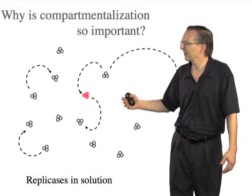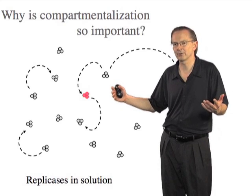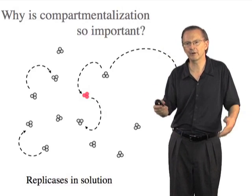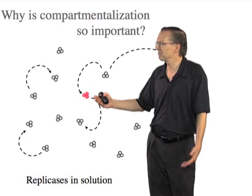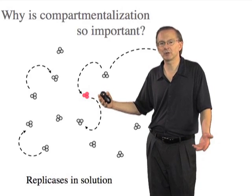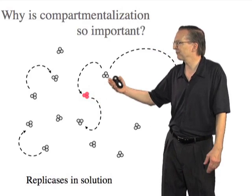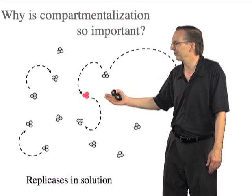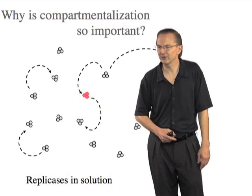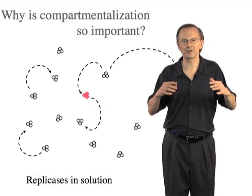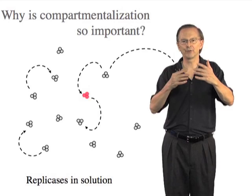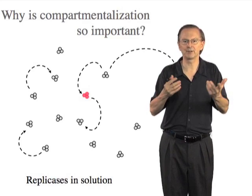If we think about RNA replicases floating around in solution — RNA molecules that catalyze the replication of another RNA molecule — it doesn't really help if you have a mutation which is faster or more accurate, if all it's doing is copying random other RNAs that it bumps into in solution. It has to have an advantage for itself, and the simplest way to imagine that is to encapsulate these molecules within a vesicle, so that they're always copying molecules that are related by descent.